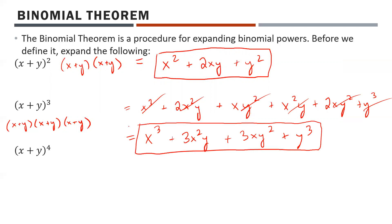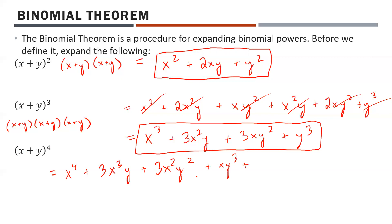Notice how much more work that was. Let's do one more: x plus y to the power of 4, which is just x plus y times the previous result. Working through it: x⁴, plus 3x³y, plus 3x²y², plus xy³. Then multiplying by y: x³y, plus 3x²y², plus 3xy³, plus y⁴.